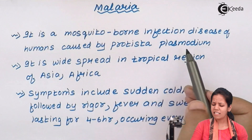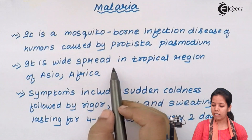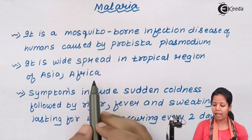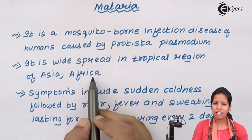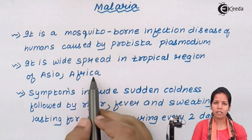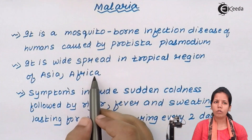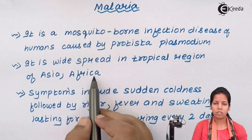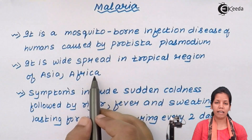Malaria is constantly seen in tropical regions of Asia and Africa. Especially in African regions, due to the absence of treatment, medicines, and proper diagnosis, malaria is a more deadly and prone disease.